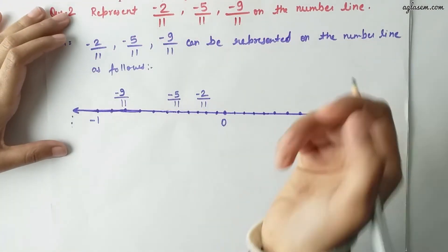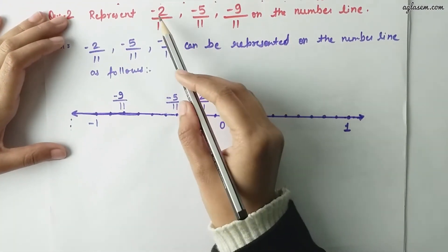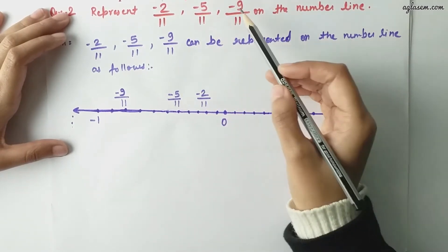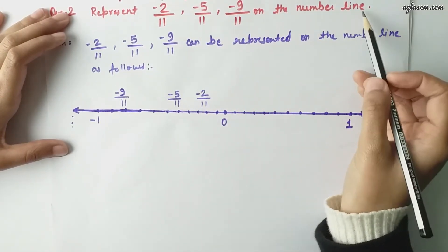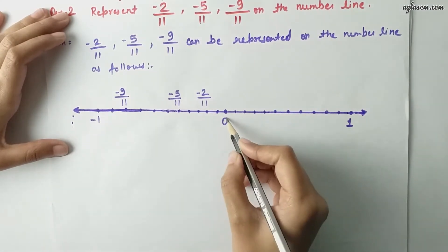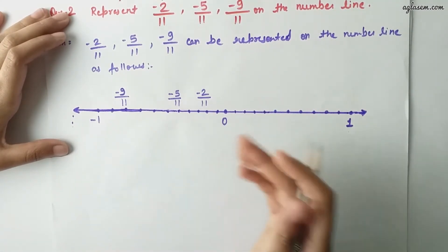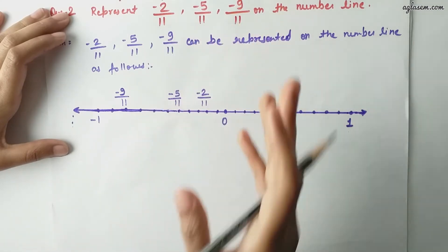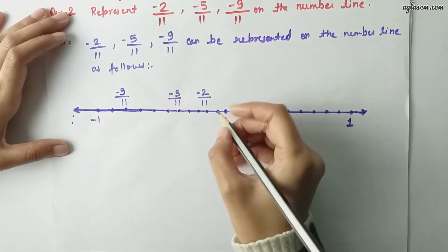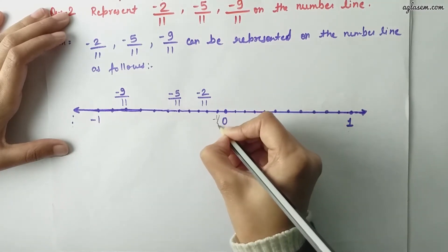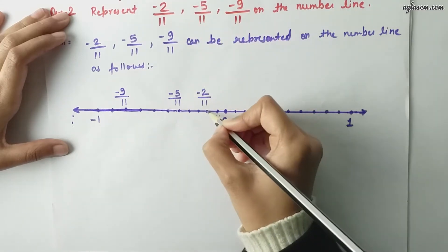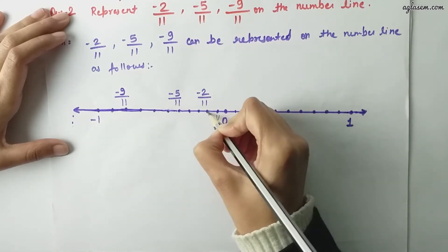Moving to the second question: represent minus 2 by 11, minus 5 by 11, minus 9 by 11 on the number line. First of all write 0, 1, minus 1. All these values are negative, so we have to move on the left side of our number line. The first is minus 1 by 11, minus 2 by 11. So minus 2 by 11 lies here on the number line.